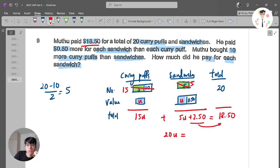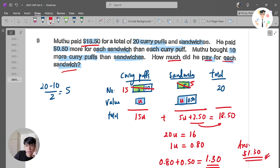$2.50, if I move there, it will become minus. So $18.50 minus $2.50 gives me 16. And I know 1 unit is equal to 16 divided by 20, which is $0.80. How much did he pay for each sandwich? Each sandwich cost U plus $0.50. So U is $0.80, plus $0.50. Means that the cost for each sandwich is $1.30. That's it. It's a number and value concept here.